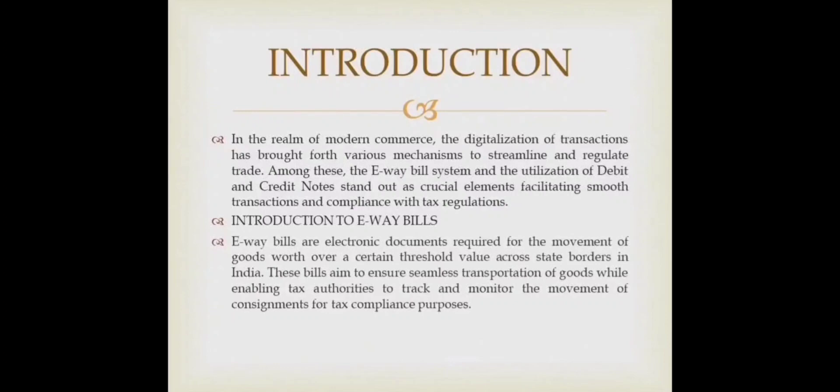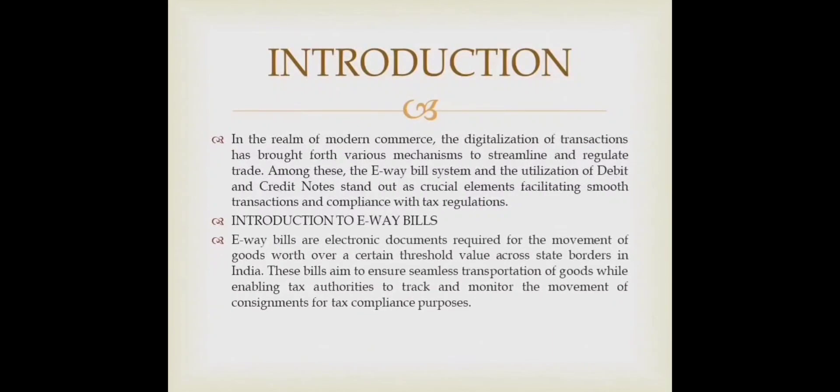These bills aim to ensure seamless transportation of goods while enabling tax authorities to track and monitor the movement of consignments for tax compliance purposes. The key components of e-way bills are: Generator — the entity responsible for initiating the e-way bill generation process; Transporter — the individual or entity tasked with physically transporting the goods; and Recipient — the party to whom the goods are being delivered.